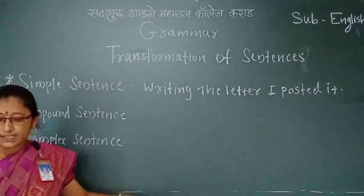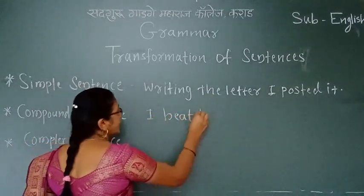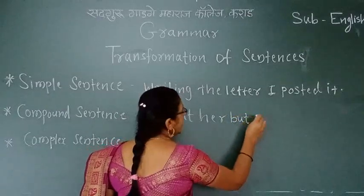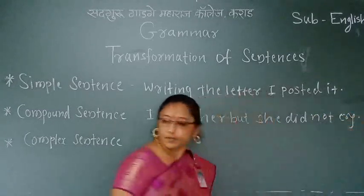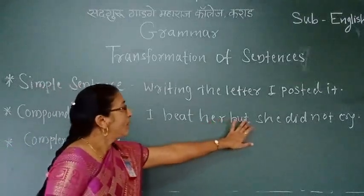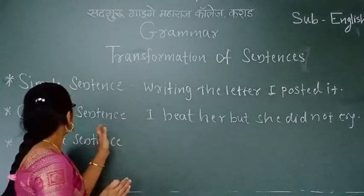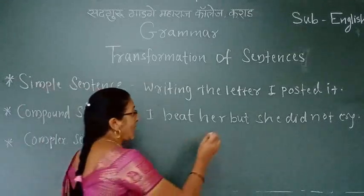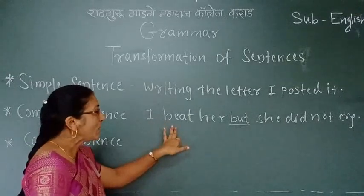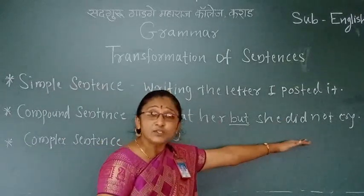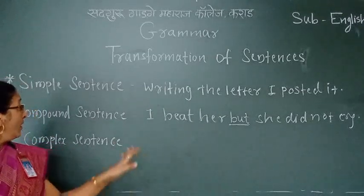For example: 'I beat her, but she did not cry.' This is one example of a compound sentence. We join two clauses in a compound sentence with a coordinating conjunction. Here 'but' is the coordinating conjunction. 'I beat her' is one main clause, and 'she did not cry' is another main clause.